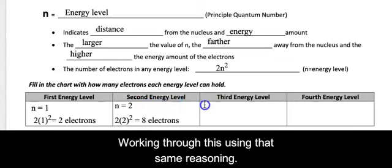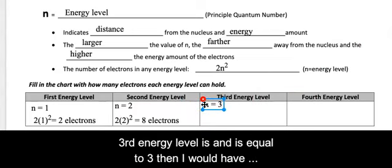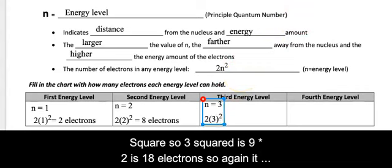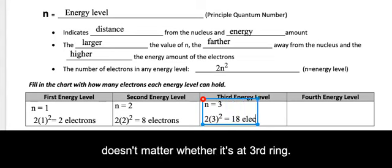Then I keep working through this using that same reasoning. If the third energy level is n is equal to 3, then I would have 2 times 3. Oops, let's back that up. Goodness, that 3 one's giving me some trouble. Squared. So 3 squared is 9 times 2 is 18 electrons.